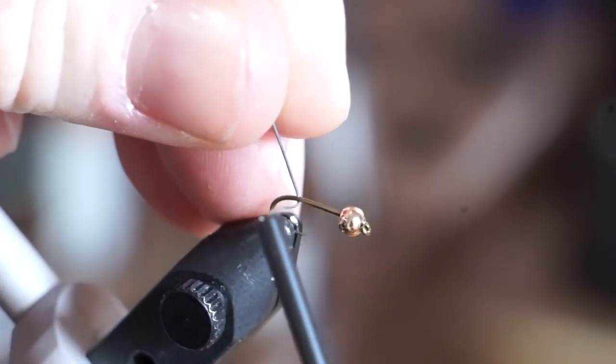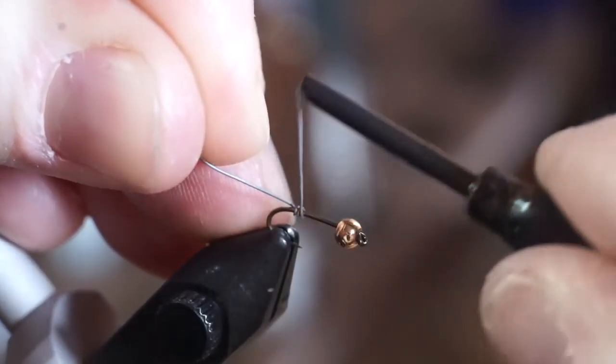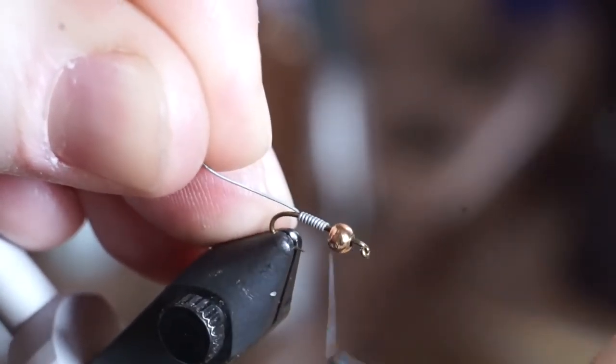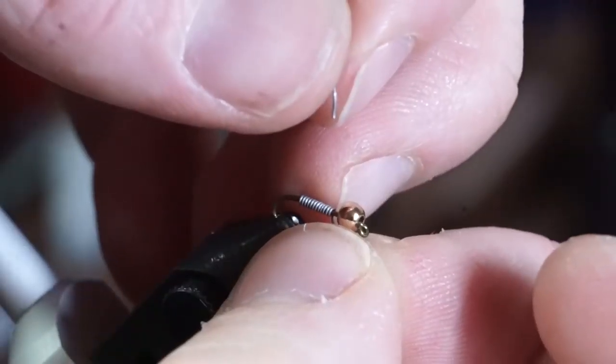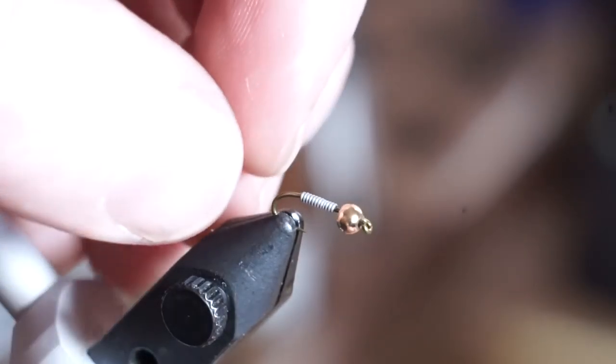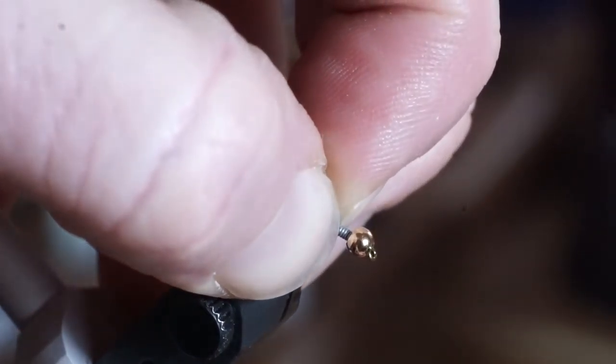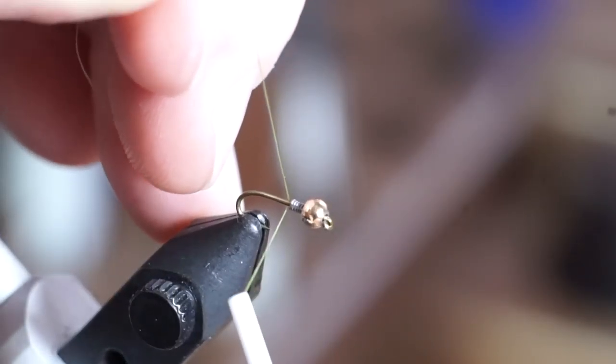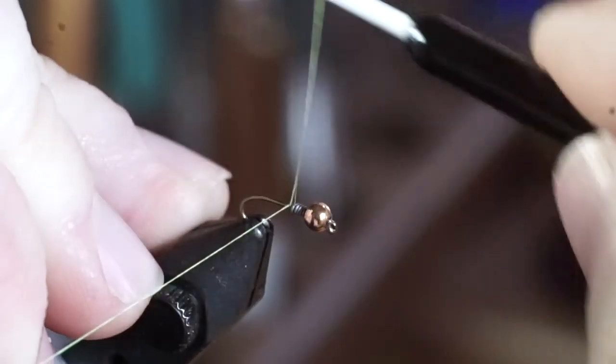Put some .010 sized lead wire on a bobbin holder and wind on 10-14 wraps. Then push the lead wire up into the bead to stabilize it. The thread I am using is Vivas 10-0 in olive.